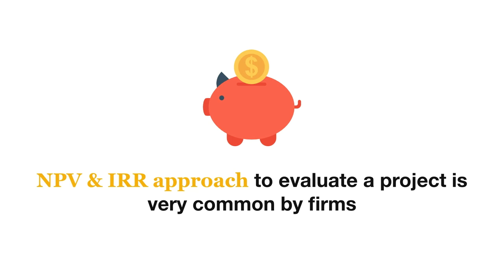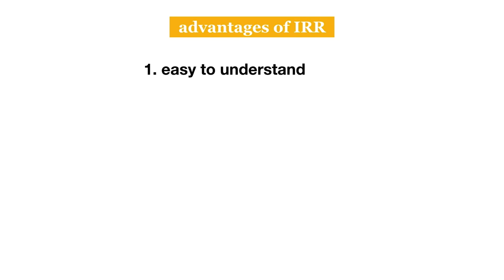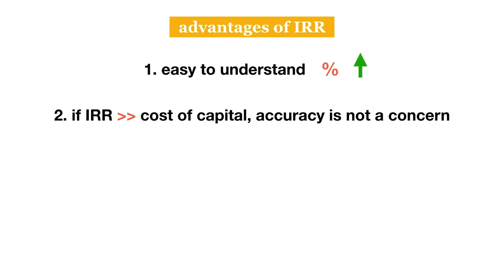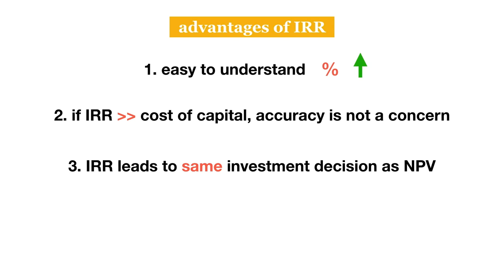Some firms choose to rely on the internal rate of return for a few reasons. Advantages of IRR: it is easy for investors to understand — we talk about our cost of capital in percentage terms, so it makes sense to express our return the same way. When we only have a limited amount of money to spend, it is more helpful to know how we can maximize our percent return — our return for each dollar we spend — rather than an absolute dollar value such as NPV. If the IRR is sufficiently larger than our cost of capital, our minimum rate of return, we don't have to worry as much about estimating our cash flows with perfect accuracy, since it can often be difficult to predict future cash flows and expenses. IRR generally leads us to make the same investment decision as the NPV rule, as long as the NPV of a project declines smoothly as the discount rate increases.